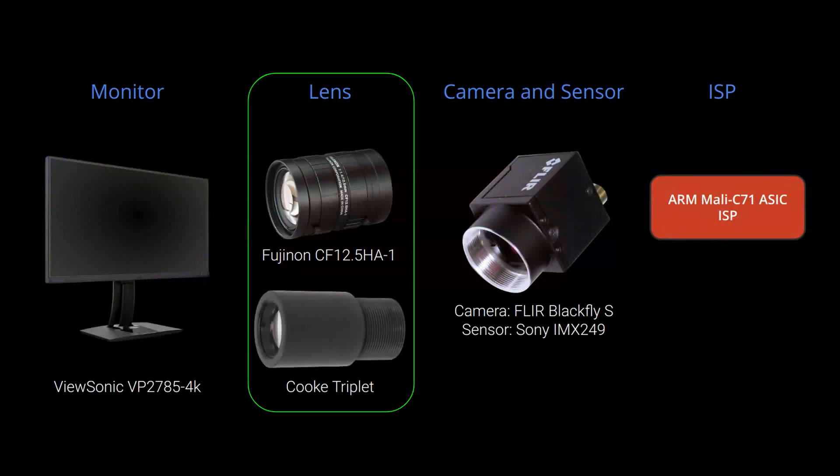Here are the optical systems we used in this experiment. The goal was to fool a particular optical module, such as the Fujinon optics shown here, while leaving another optical system, that is the Cook triplet, intact, and vice versa.